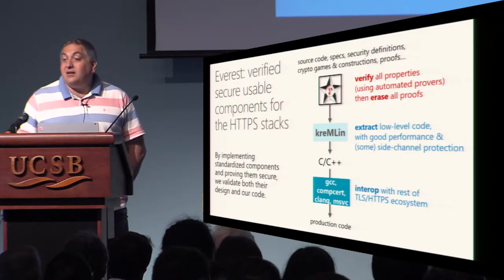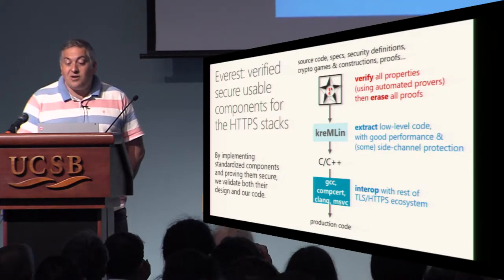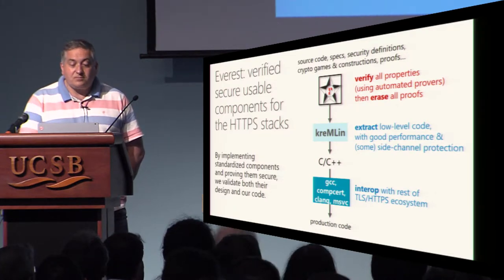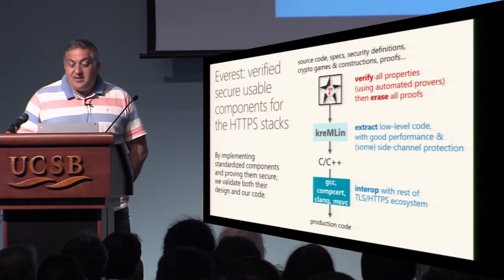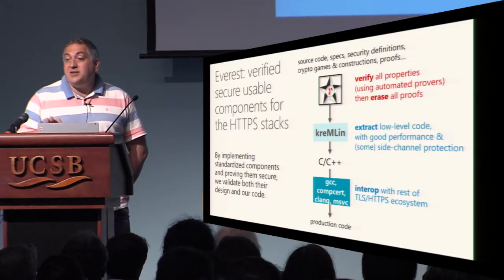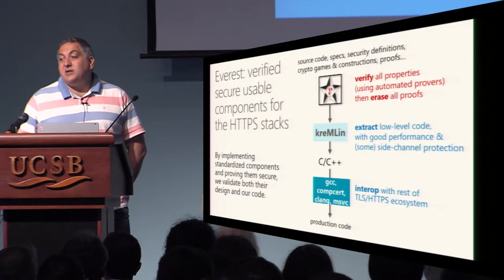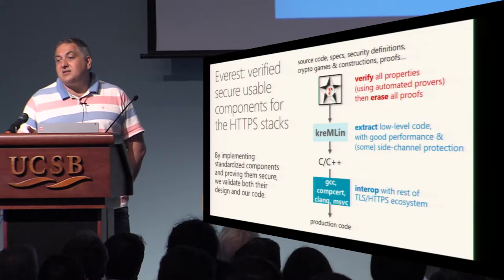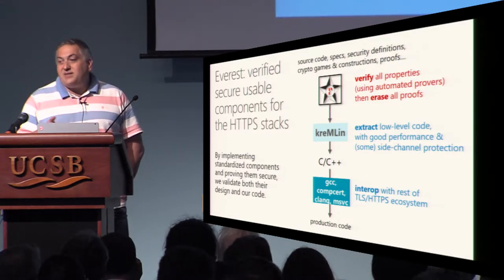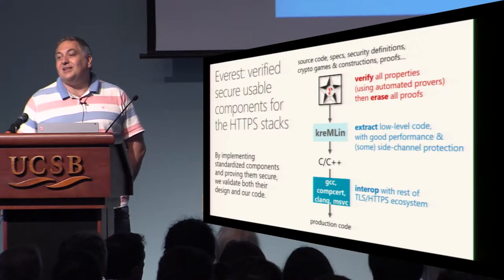Once we are satisfied that everything specified has been checked, we can erase the proofs and specifications and extract lower-level code — down to C. We realize that C is unavoidable if you want to integrate with the ecosystem. We spent a lot of time generating high-quality readable code because we expect people to conduct independent reviews at that level. What we build is a single model plus implementation with formal support. We can validate the design and get a concrete implementation where we can work on performance and get security properties down to the implementation of the protocol.